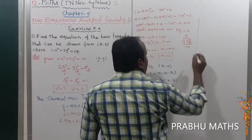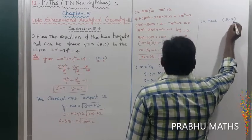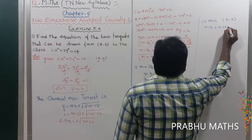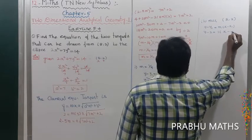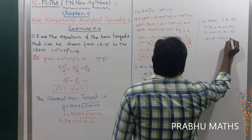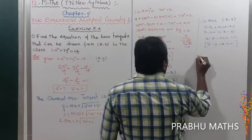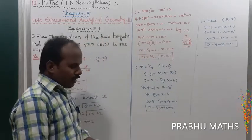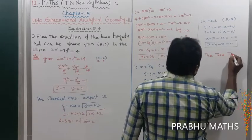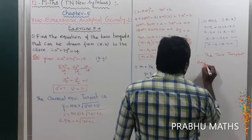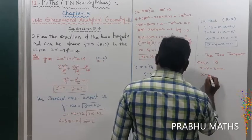For the second tangent equation, using m = 1 and point (5, 2): y − 2 = 1·(x − 5). Expanding: x − y − 5 + 2 = 0, which gives x − y − 3 = 0. That is the second tangent equation.